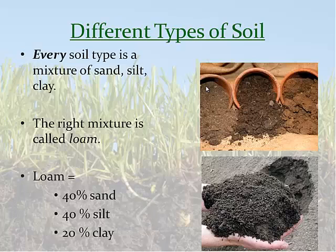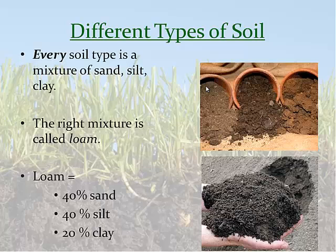There are different types of soil, but every type of soil is a mixture of sand, silt, and clay. The perfect mixture of soil is something we would call loam. Loam is a 40% mixture of sand, 40% mixture of silt, and 20% mixture of clay. You've got some of the larger sediment, some of the middle-sized sediment, and just a little bit of that small sediment of clay. What happens is it's really able to hold the right amount of water that vegetation needs to grow. If you were looking for the perfect mixture of soil, it would be called loam: 40% sand, 40% silt, and 20% clay.